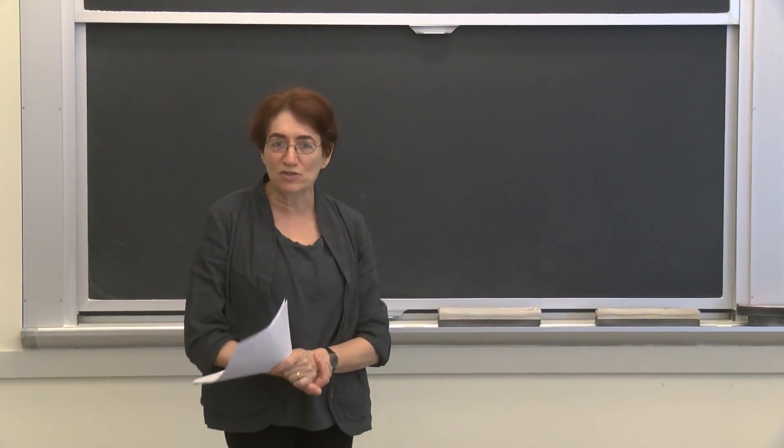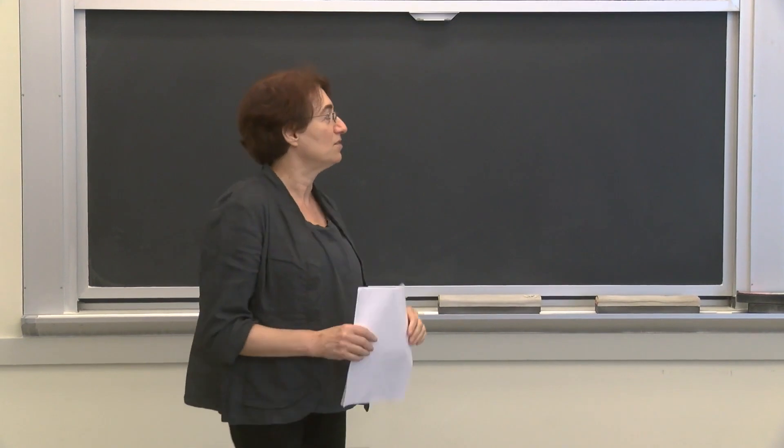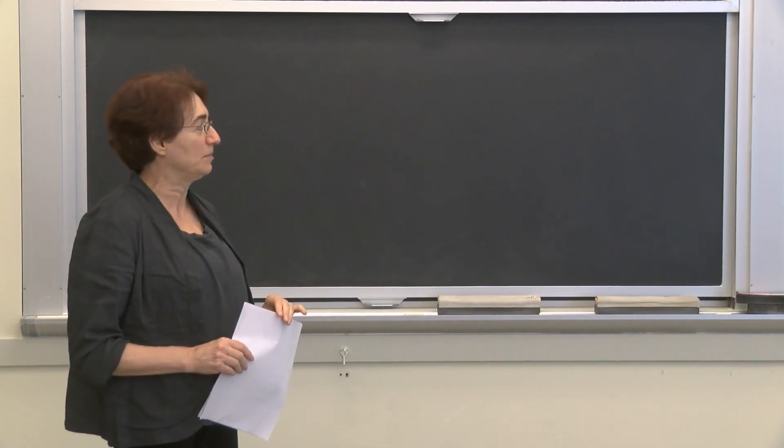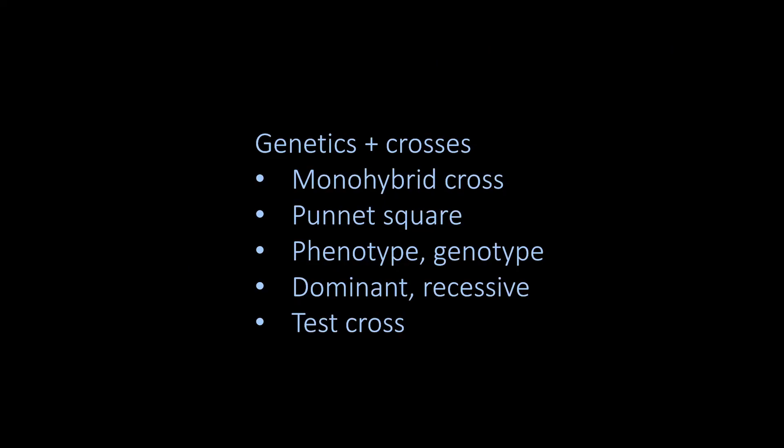After the genetics plus crosses segment of this class, you should be able to think about a monohybrid cross and know what that means. You should be able to work a Punnett square and look how alleles segregate, and what the F1 looks like. You should be able to do an F1 cross, understand the difference between phenotype and genotype, understand dominant and recessive as two characteristics of traits, and understand the notion of a test cross.